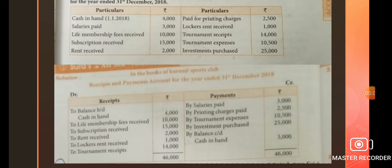Debit side total is 46,000 and credit side total is 41,000. 46,000 minus 41,000 gives us 5,000. This value is known as closing cash in hand. The balance in the receipts and payments account — closing cash and bank balance — is rupees 5,000.